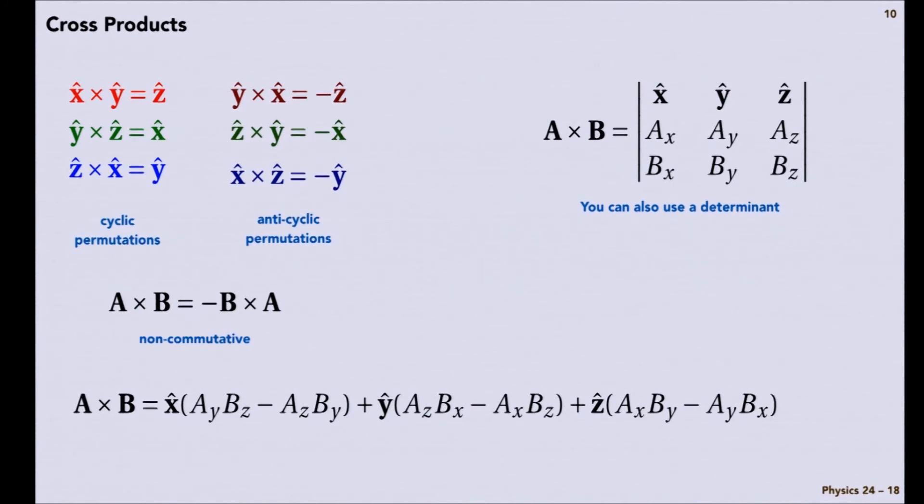So I would stick with these. These are usually faster. Just if you've got a cyclic permutation of the three components, then you get a plus sign. And if you have an anti-cyclic, you get a negative sign.